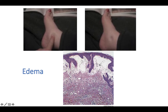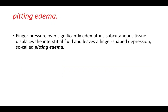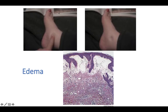Macroscopically, edema appears as swelling. Microscopically, the histopathological appearance of edema shows clearing and separation — clefting — of the interstitial connective tissue. Pitting edema occurs when a finger pressed over significantly edematous cutaneous tissue displaces the interstitial fluid, leaving a finger-shaped depression. When the finger is removed, the depression remains because of the displacement of edematous tissue fluid and separation of tissue.